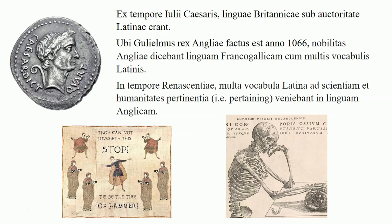So what are our tres rationes principales? First: from the time of Julius Caesar, the languages of Britain were under Latin authority. Second: when William became king of England in 1066, the nobility of England spoke the Franco-Gallic language with many Latin words. And finally, in the time of the Renaissance, many Latin words pertaining to science and the humanities entered the English language.